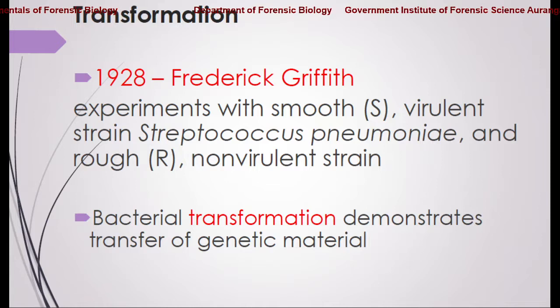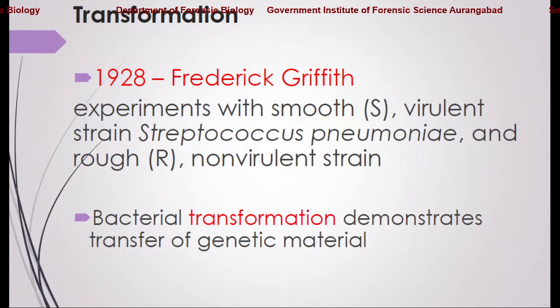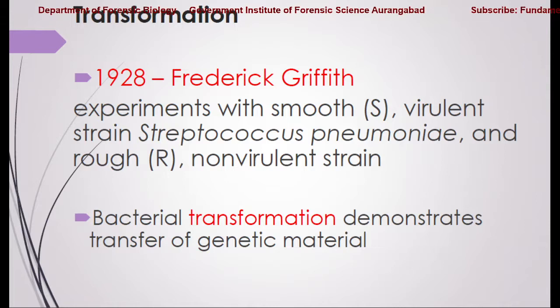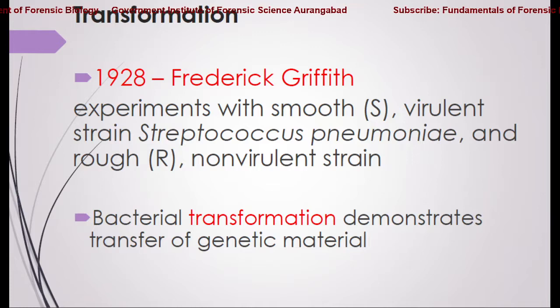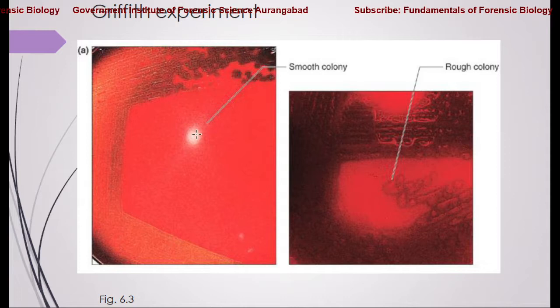The first experiment we will discuss is Griffith's experiment — that is, transformation. In 1928, he performed an experiment with two different strains of Streptococcus pneumoniae, the causative agent of pneumonia. Bacterial transformation demonstrated the transfer of genetic material.